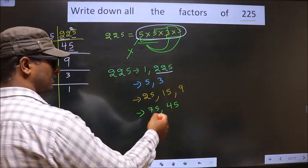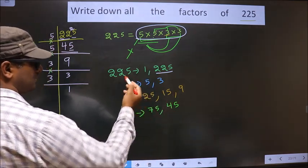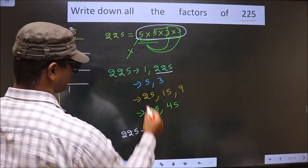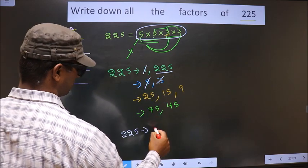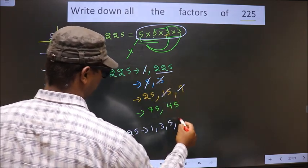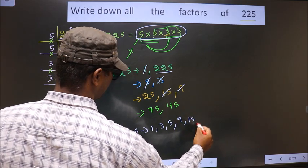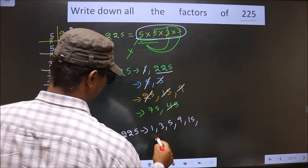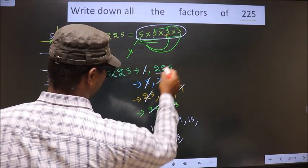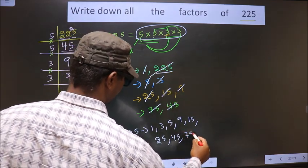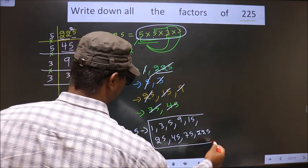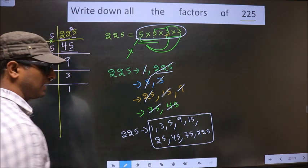Thus, these are all the factors of 225. That is, 1, 3, 5, 9, 15, 25, 45, 75, 225. So, these are all the factors of 225.